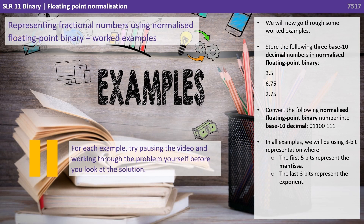We will now go through some worked examples. We are going to store three base 10 decimal numbers in normalised floating point binary: 3.5, 6.75, and 2.75. We are also going to convert the normalised floating point binary number 01100111 into base 10 decimal. In all examples we use 8 bits — the first 5 for the mantissa and the final 3 for the exponent. For each example, try pausing the video and working through the problem yourself on pen and paper before seeing the solution.